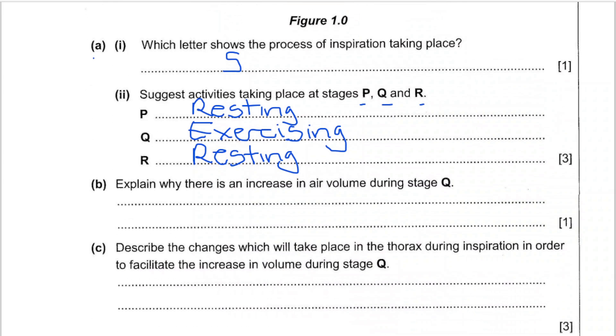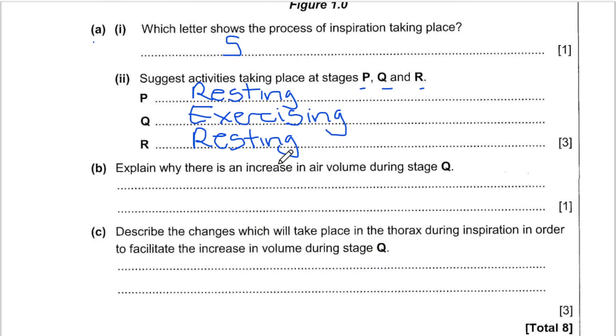Next part B, explain why there is an increase in air volume during stage Q. We said that Q is exercising, so we normally have an increase in volume because you need more oxygen, because oxygen will provide the energy needed during respiration so that the person can actually do more work since they are being active.